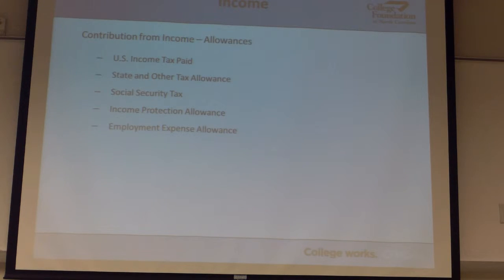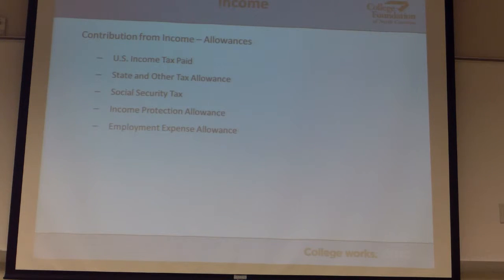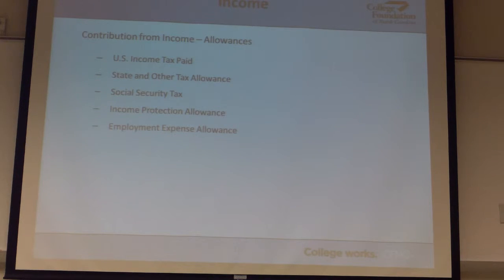Here's how much you brought in, and here's what's available — we need to know what's available to contribute to the student. So we want to subtract out things that we know you had to pay, taxes being one of them. We know for sure you pay taxes and that's not available to the student, so we're going to pull that out of your available income formula.